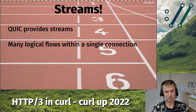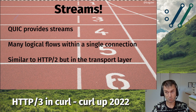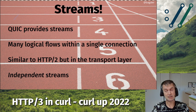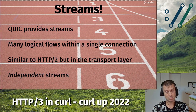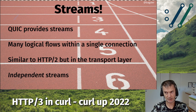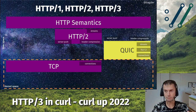You set up one connection and run many independent streams over it. These streams are in-order and reliable individually, but they are independent of each other. If you drop a packet belonging to one stream, that stream has to pause and wait for retransmission, but other streams that didn't lose any packets can continue. So streams can actually arrive in a different order than they were sent.